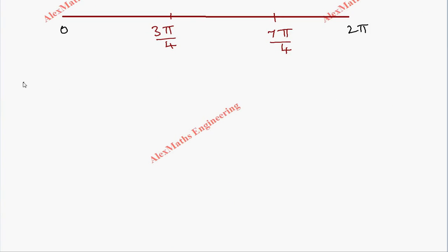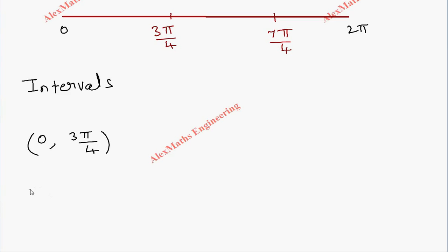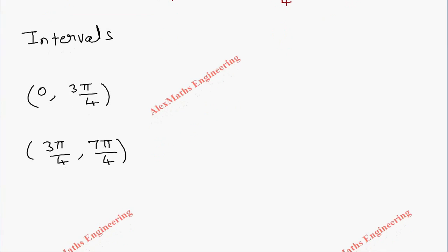We form a table with three intervals: the first interval is (0, 3π/4), the second is (3π/4, 7π/4), and the third is (7π/4, 2π). We will find the sign of f''(x) = −sin x − cos x in each interval.